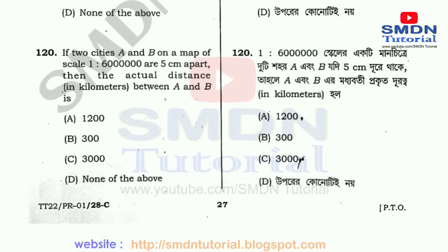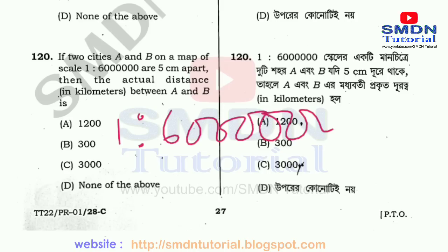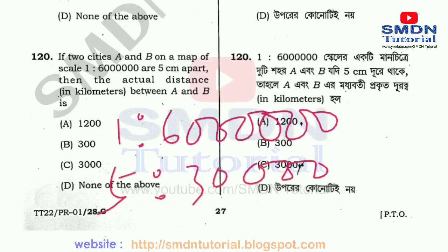Last question: 1 to 6,000,000,000, 1 to 1. 5, 5, 6, 6, 1, 2, 3, 4, 5, 5, 5, 6, 6. 1, 1, 1, 1, 1.